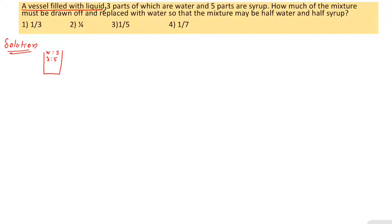Water is the first specific quantity of the mixture. We take Q as the amount of mixture to be drawn off and replaced.